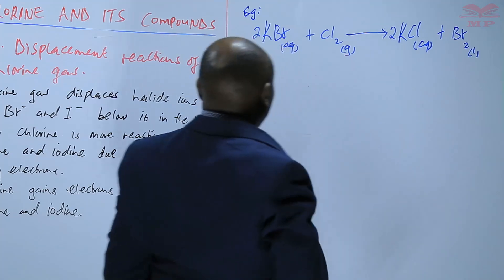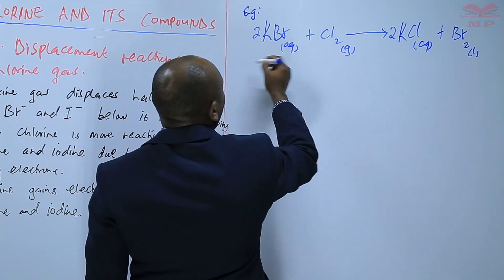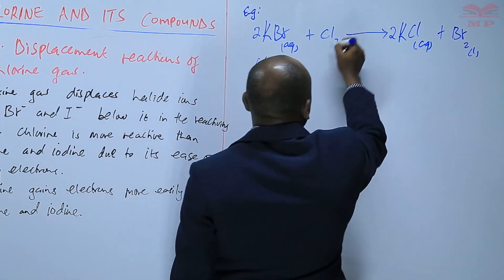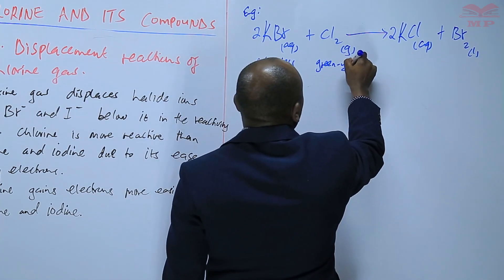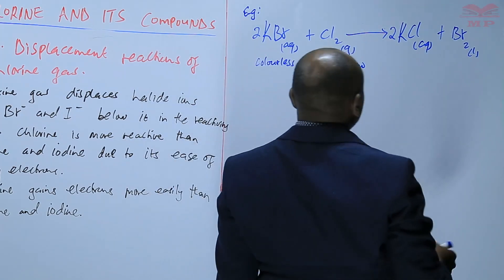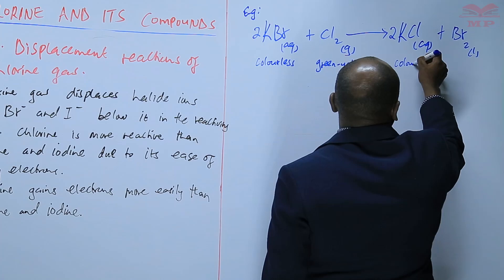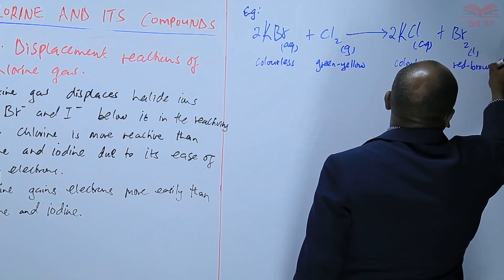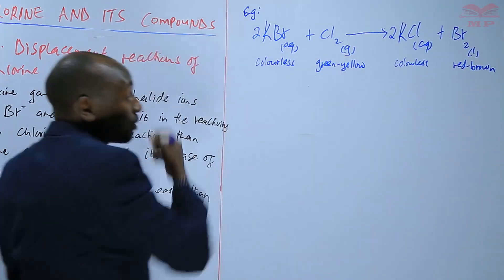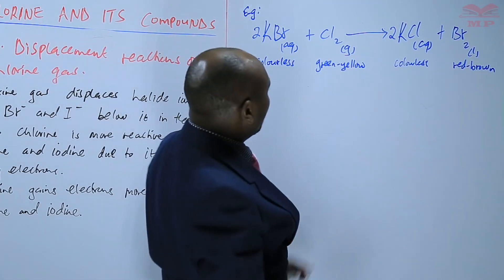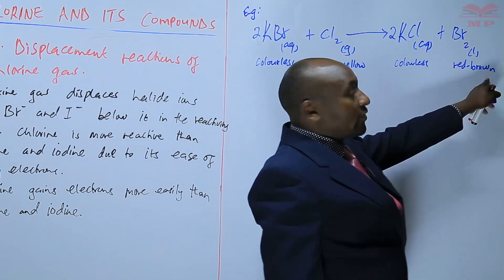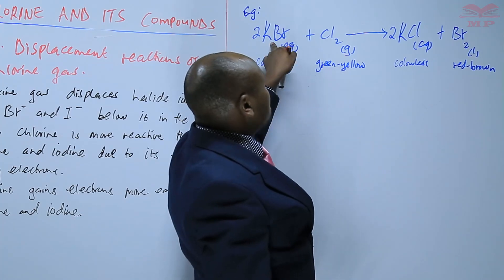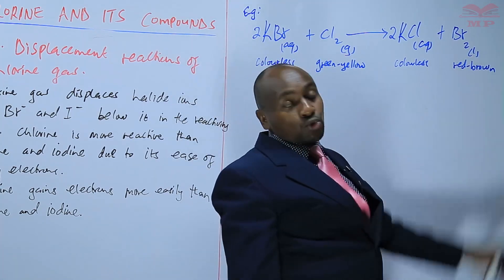The color of potassium bromide is colorless, and the color of chlorine is green-yellow. But after displacement, potassium chloride is colorless and we form a red-brown liquid, because bromine is red-brown. So the color changes from green-yellow to red-brown. Green-yellow is the color of chlorine, but after the displacement of bromine, the color changes to red-brown.